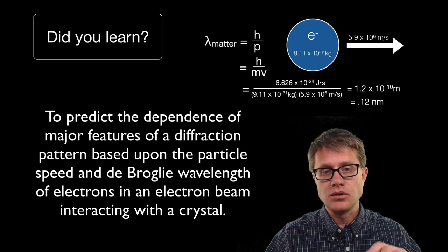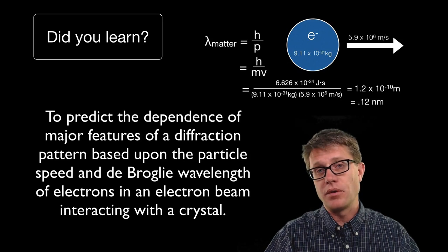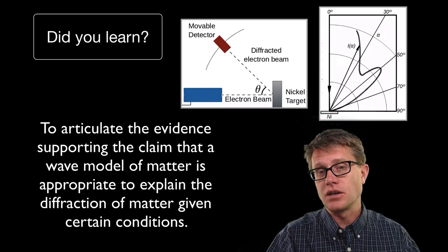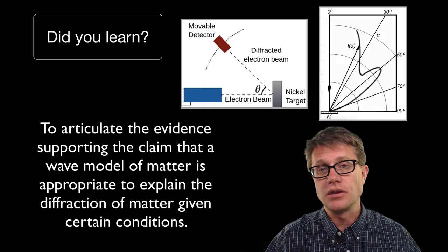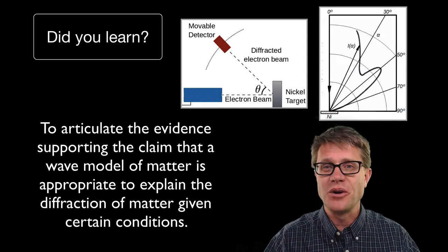And so did you learn to predict the dependence of the de Broglie wavelength on both the mass and the velocity? And then can you see that the Davis and Germer experiment showed interference in electrons and therefore showed that those electrons, matter, were acting as waves? I hope so. And I hope that was helpful.